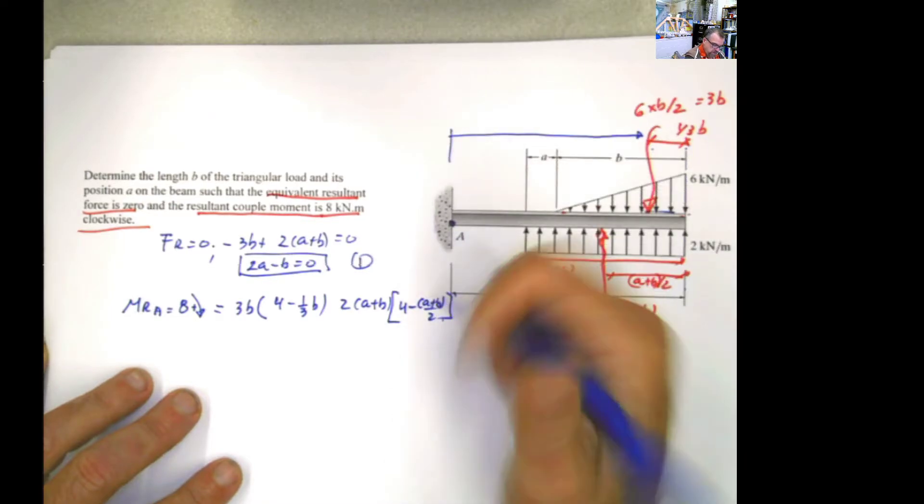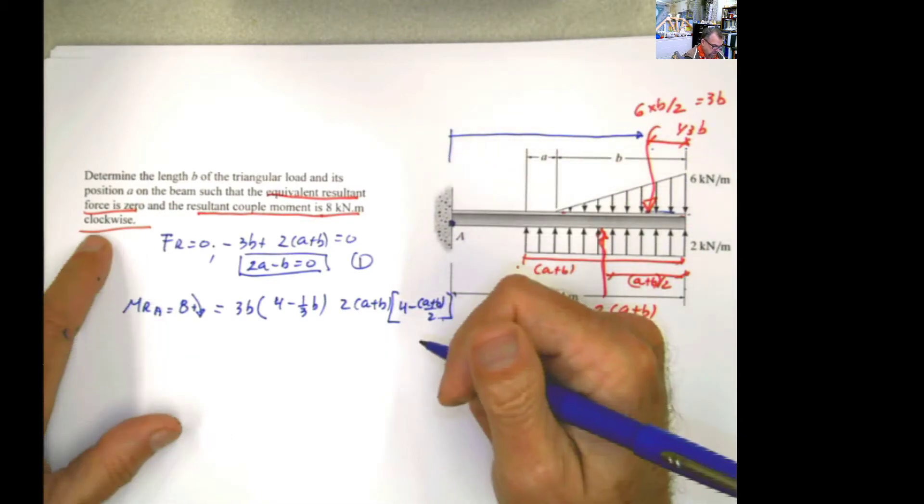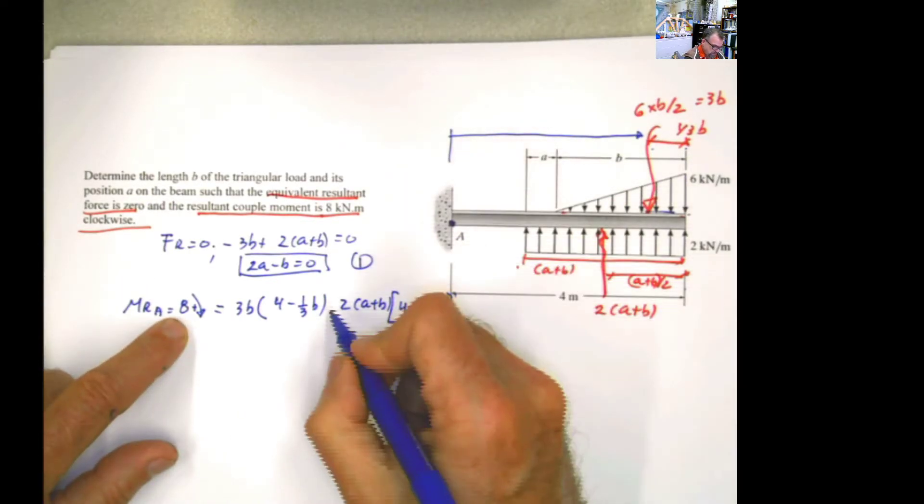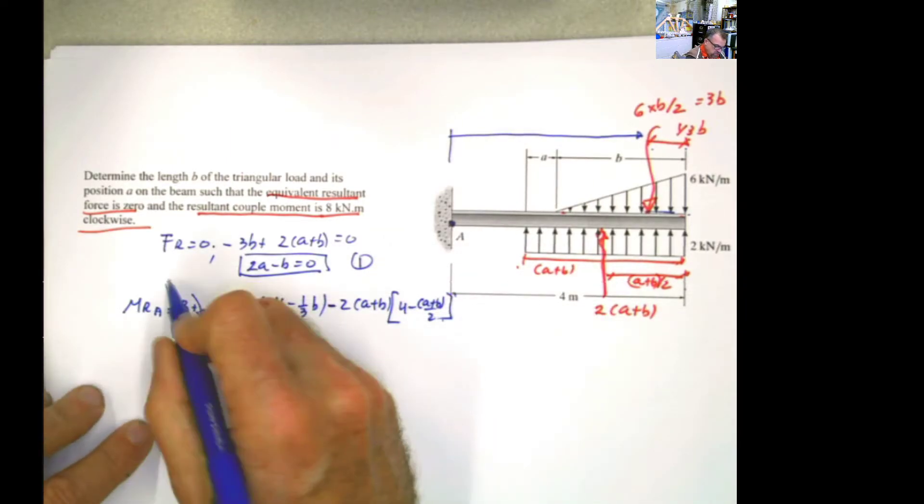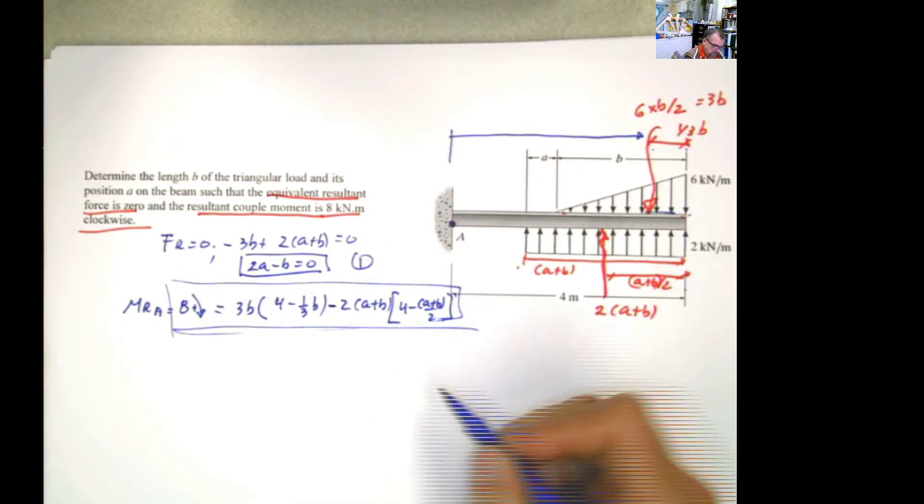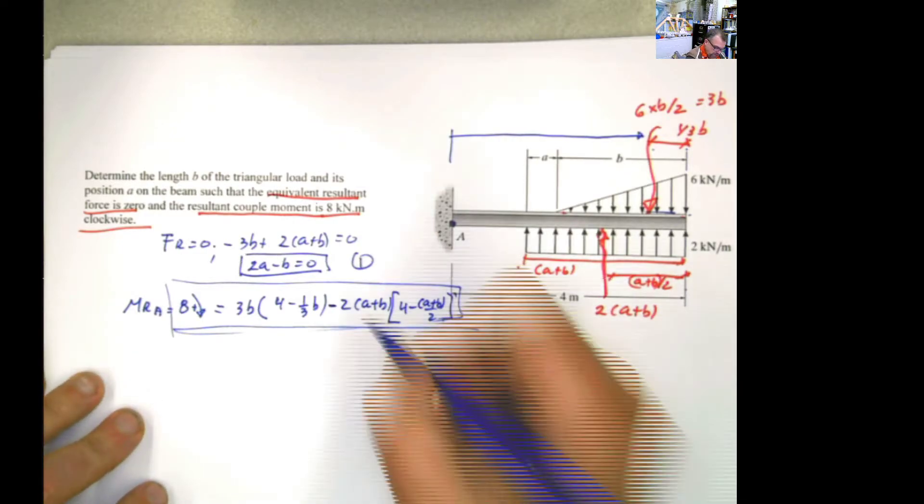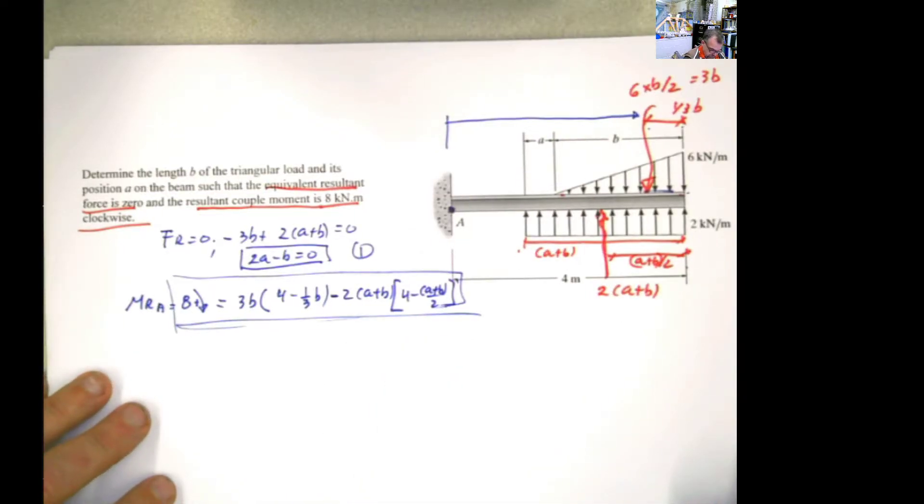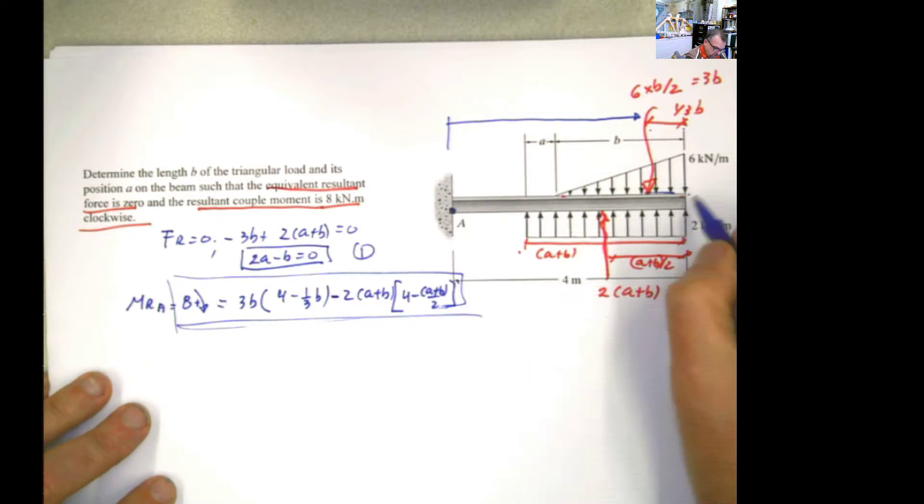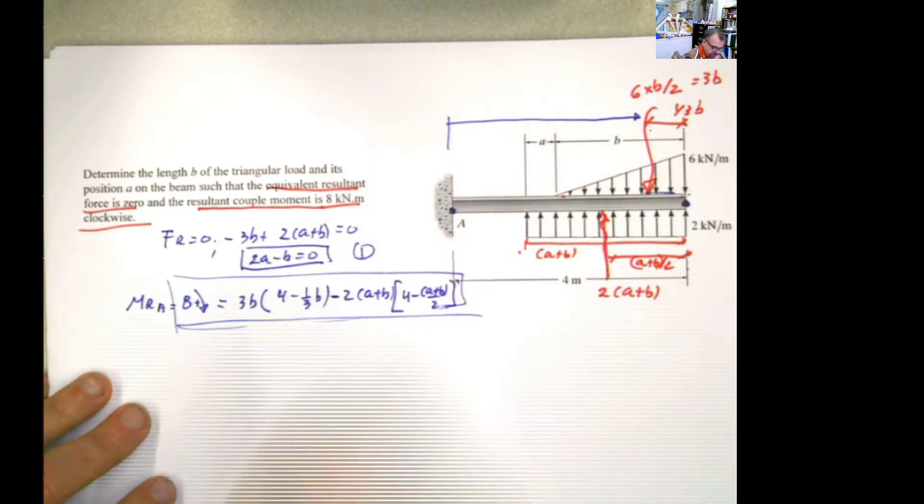And the distance will be the same, I mean, 4 minus (a plus b) divided by 2. And now it's going to be counterclockwise. And I say clockwise is positive, so it's going to be negative. Now, you can solve for this equation. But I'm going to show you something easier. Do that, and you should get the same result. I'm going to do moment with respect to here. And it has to be 8, because the problem states that.